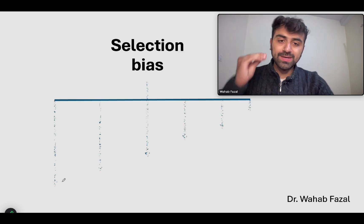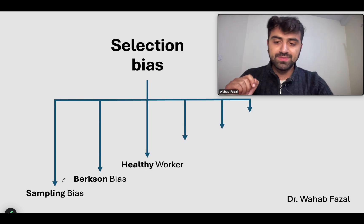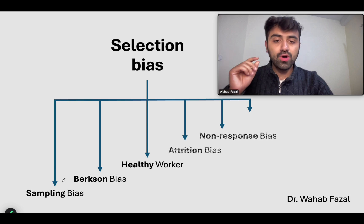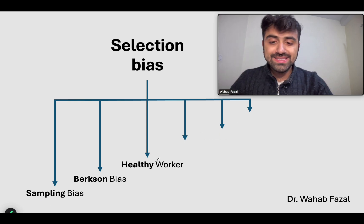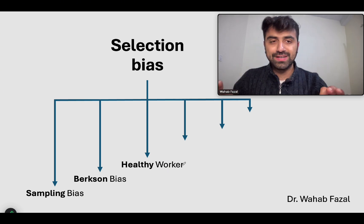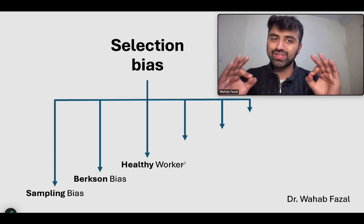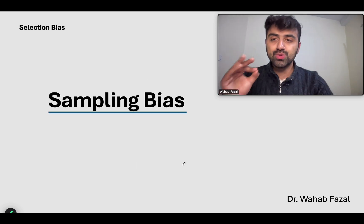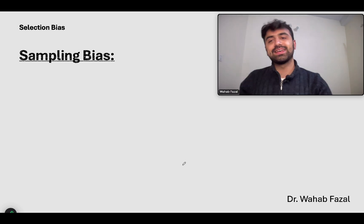When we talk about its subtypes, I want you to know these six major subtypes. We'll talk about three first — these happen when you are choosing your sample. The first one is sampling bias, and let's talk about that with the help of a very interesting example.